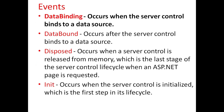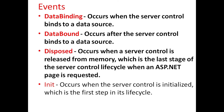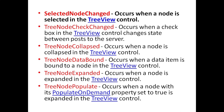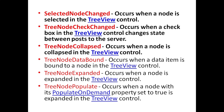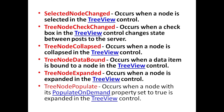Different events are: DataBinding, which occurs when the server control binds to a data source; Disposed, which occurs when a server control is released from memory, which is the last stage of the server control life cycle; Init, which occurs when the server control is initialized, which is the first step in its life cycle; SelectedNodeChanged, which occurs when a node is selected in the TreeView control; TreeNodeCheckChanged, which occurs when a checkbox in a TreeView control changes state between posts to the server; TreeNodeCollapsed, which occurs when a node is collapsed in the TreeView control; TreeNodeDataBound, which occurs when a data item is bound to a node; and TreeNodeExpanded, which occurs when a node is expanded in the TreeView control.